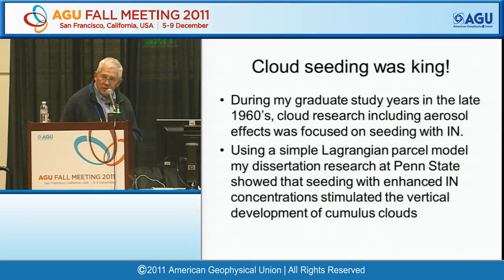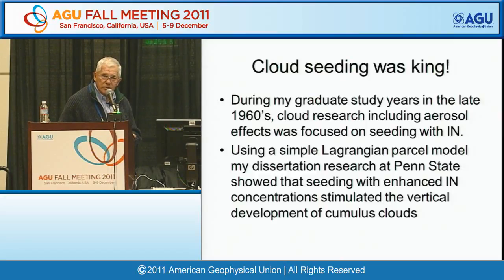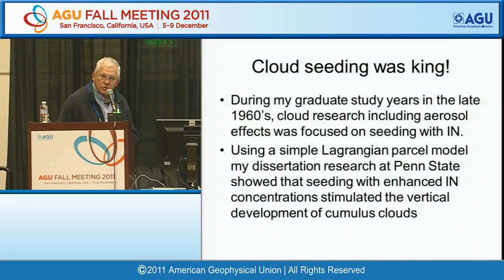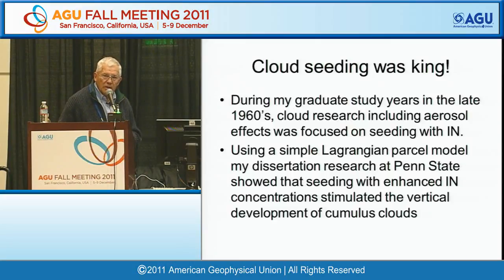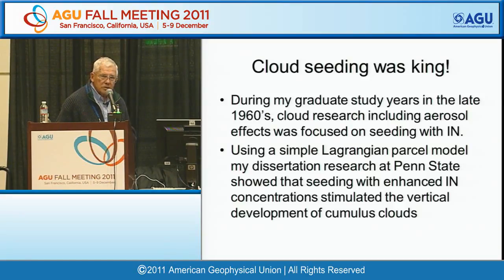One interesting finding was that the rapidity of glaciation of a cloud — how fast it's converted from liquid to ice — was dependent on the concentrations of drizzle droplets and supercooled raindrops, which in turn was influenced by concentrations of CCN. If you had high concentrations of CCN, it suppressed the drizzle formation process. As a result, the rapidity of glaciation of a cloud is a lot slower than if the cloud were very clean and low on CCN. The implication was that maritime or clean air mass convective clouds were more responsive to cloud seeding than highly polluted ones.